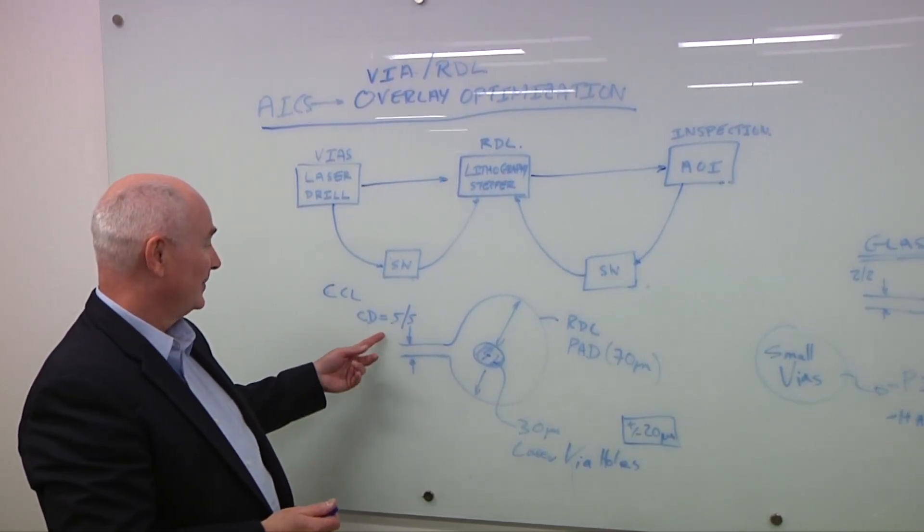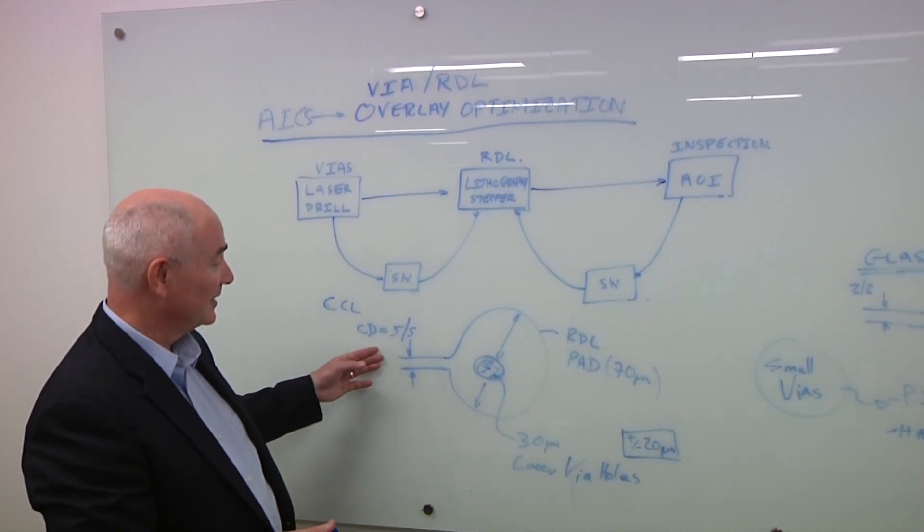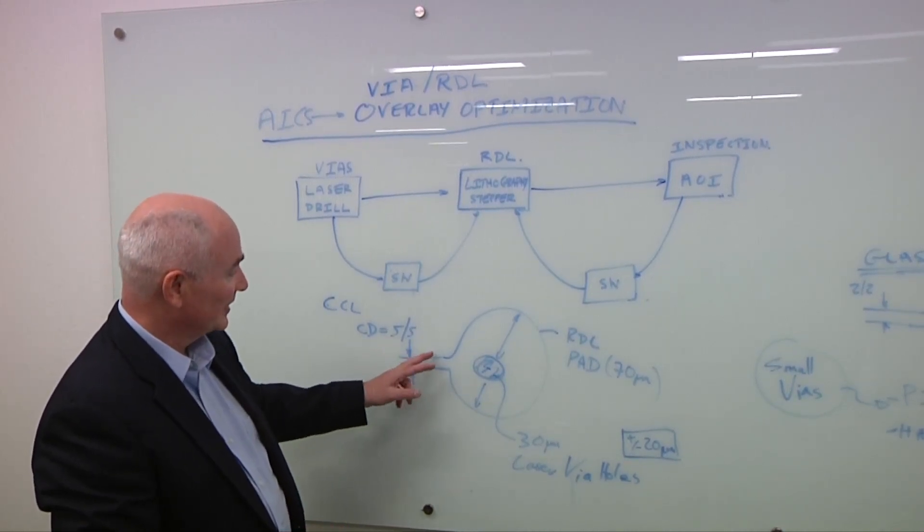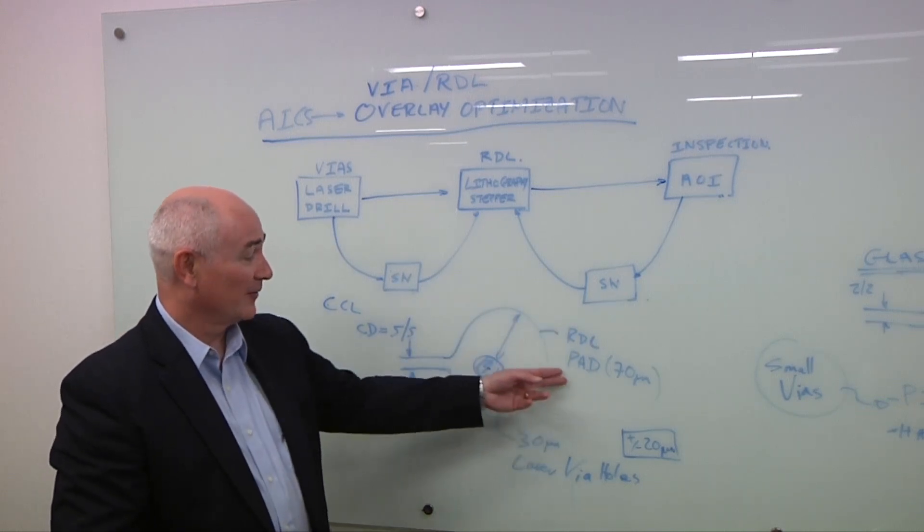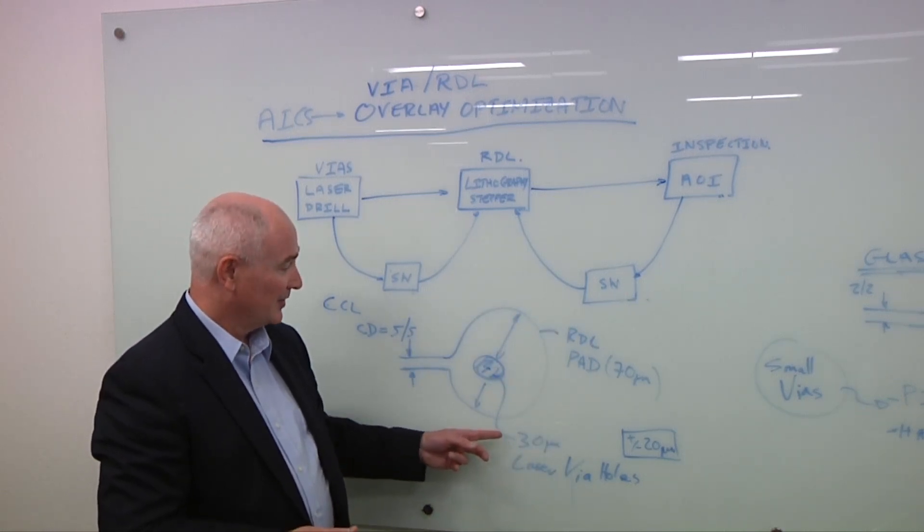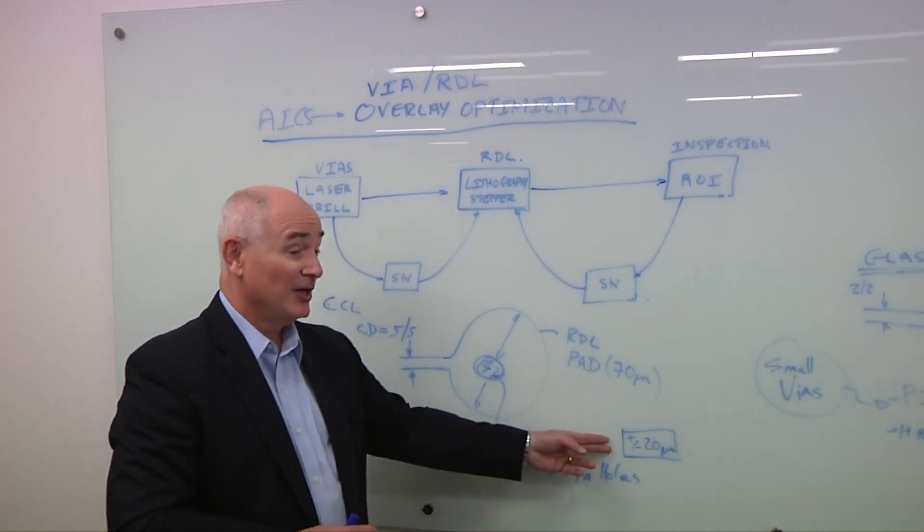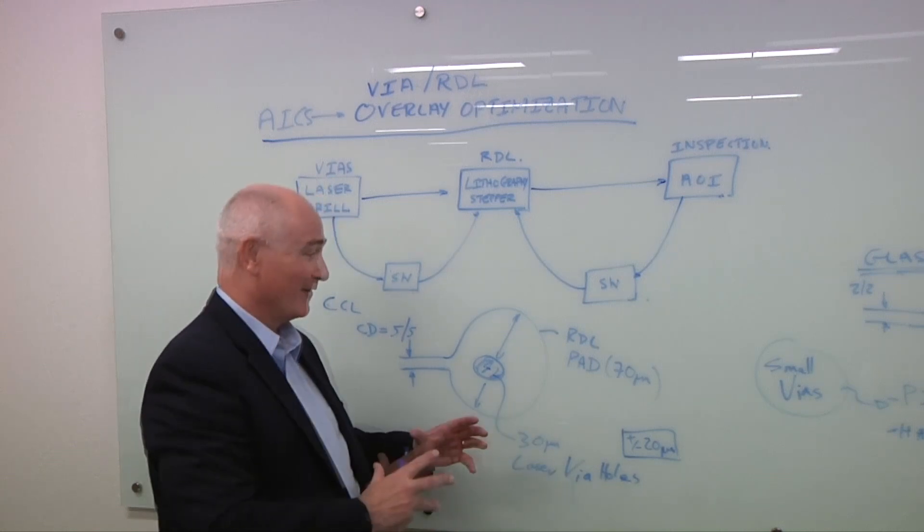But 5.5, that's an RDL line space. But at the end of the RDL trace, there's this massive, great big RDL capture pad. And typically, the laser-drilled holes are 30 microns. So if you have a 30-micron laser-drilled hole, you must have a pad that's 70 microns to give yourself 20 microns of overlay error capability.